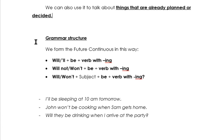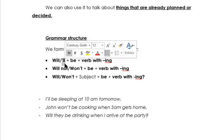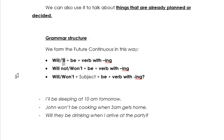How do we form the future continuous? Well, by using will or the contraction 'll plus be, the verb to be, plus the verb with -ing — the main verb always with -ing.